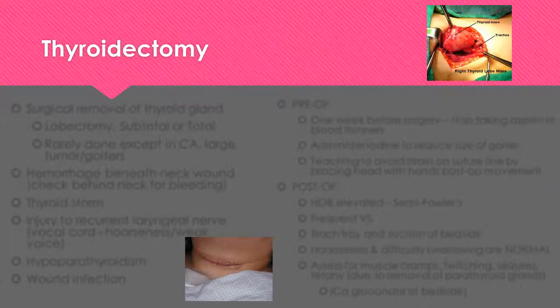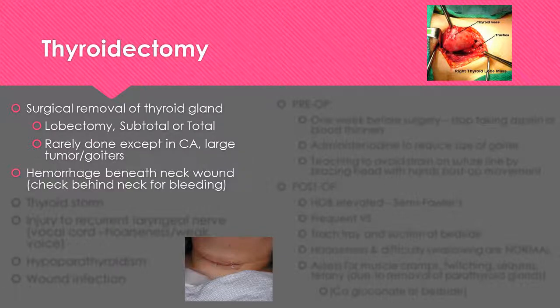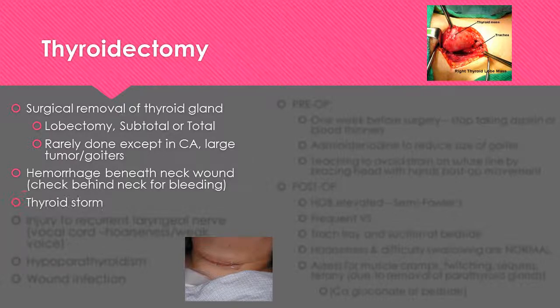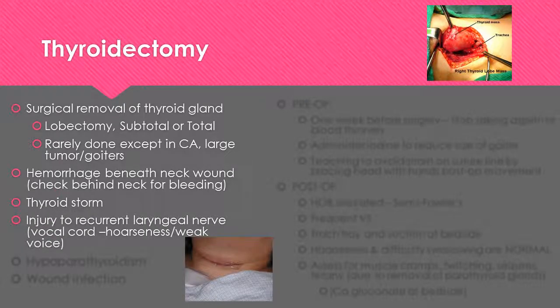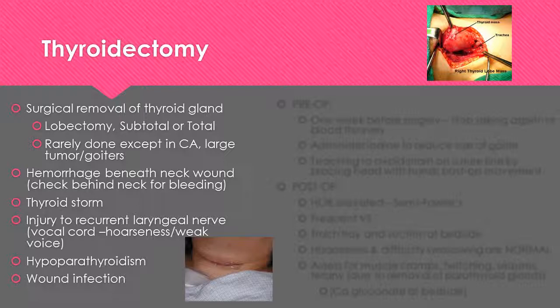A thyroidectomy is a surgical removal of the thyroid gland. It is possible to receive a lobectomy, which may be a subtotal or total thyroidectomy. It is rarely done except in cases of cancer, large tumors, or goiters. After a thyroidectomy, the nurse will monitor for hemorrhage beneath the neck wound. The patient is at potential risk for thyroid storm, potential injury to the recurrent laryngeal nerve, and hypoparathyroidism. The nurse will also monitor for wound infection.